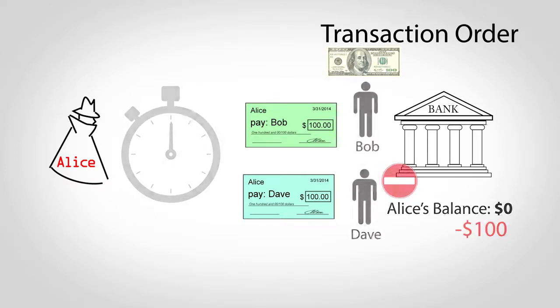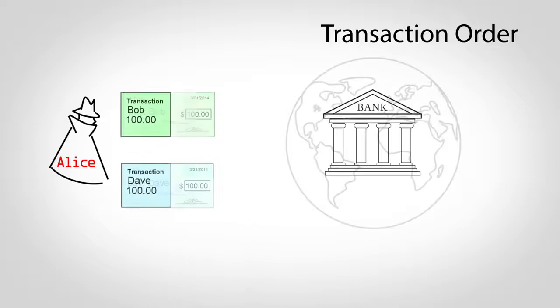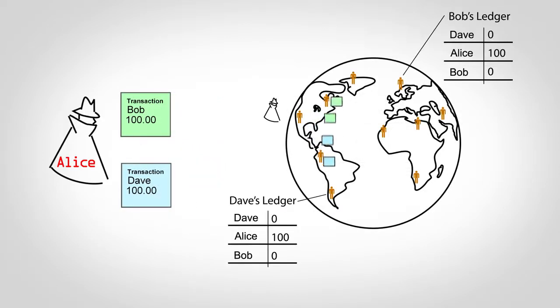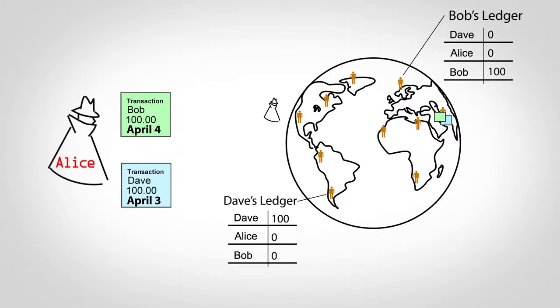So the order of these checks is critical because it determines who should get paid. Unfortunately, order is much harder to determine in Bitcoin, where instead of a single bank, there are individuals all over the world. Network delays might cause transactions to arrive in different orders in different places, and fraudsters could lie about timestamps. Two recipients might both think their transaction is first and ship a product, effectively allowing Alice to spend money twice.